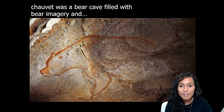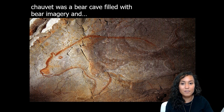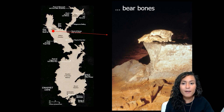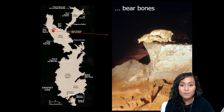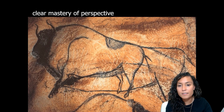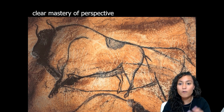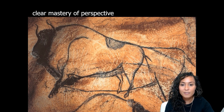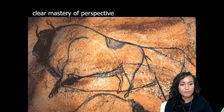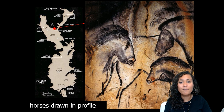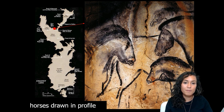Chavot was a bear cave — a place where these powerful animals hibernated. It has been suggested that human visitors came there to acquire the power of these large beasts. In addition to bear imagery, archaeologists found more than 30 intentionally placed bear skulls surrounding slabs, creating a kind of bear shrine. The Chavot artists were masters of perspective, using overlapping heads of animals to give the effect of movement and numbers, spreading paint with their hands over the rock.